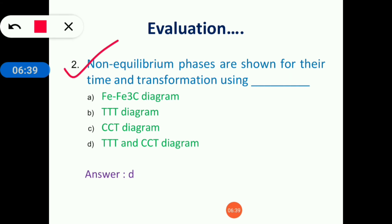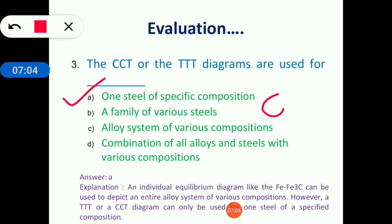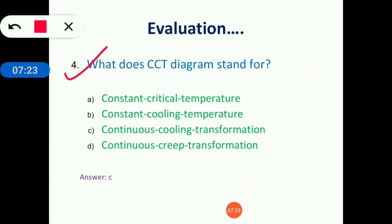Non-equilibrium phases are shown for their time and transformation using the TTT and CCT diagrams, because the iron-carbon diagram is an equilibrium diagram. The CCT and TTT diagrams are used for one steel of specific composition — we draw them for 0.8% carbon steel, which is a specific composition. What does CCT stand for? The answer is continuous cooling transformation diagram.